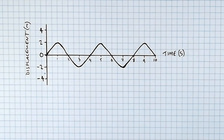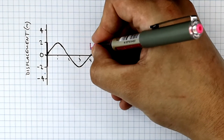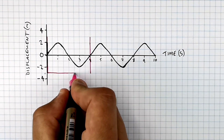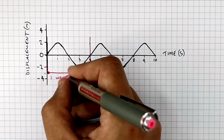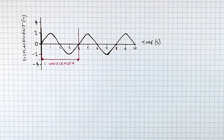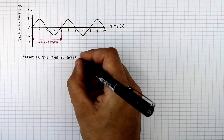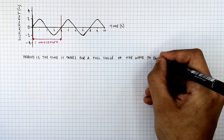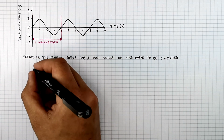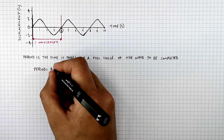So what we're now going to look at is the period of a wave. The period is the time it takes for a full cycle of a wave to be completed. We identify one wavelength of this wave from one point to the next equivalent point. I've now highlighted one wavelength on this displacement-time graph. At four seconds is when one wavelength was completed, so the period of this wave is four seconds — it's a time.